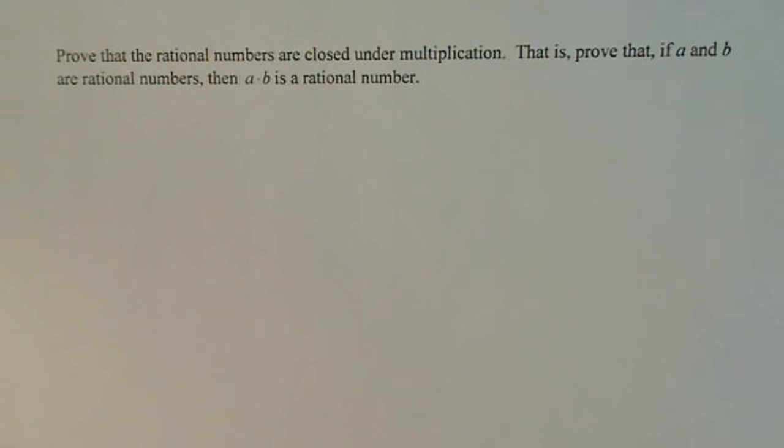Prove that the rational numbers are closed under multiplication, which means to prove that if A and B are rational numbers, then A times B is also a rational number.